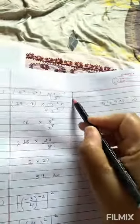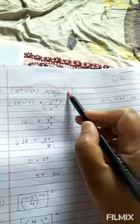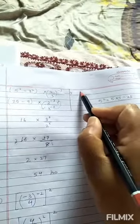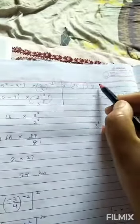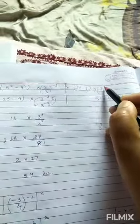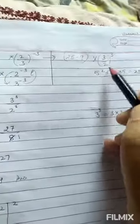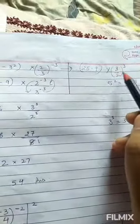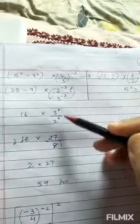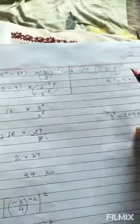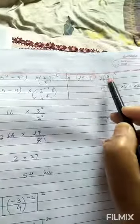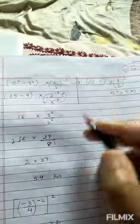One more way is that children, here only, this is your 25 minus 9 into reciprocal, this 3 upon 2, and this power will be positive. Here only you can do this thing. I have just shown you this thing also, that like this also we can do it. And now it is positive and now you can go in the same manner. Now some more questions we will do in our next video, thank you.